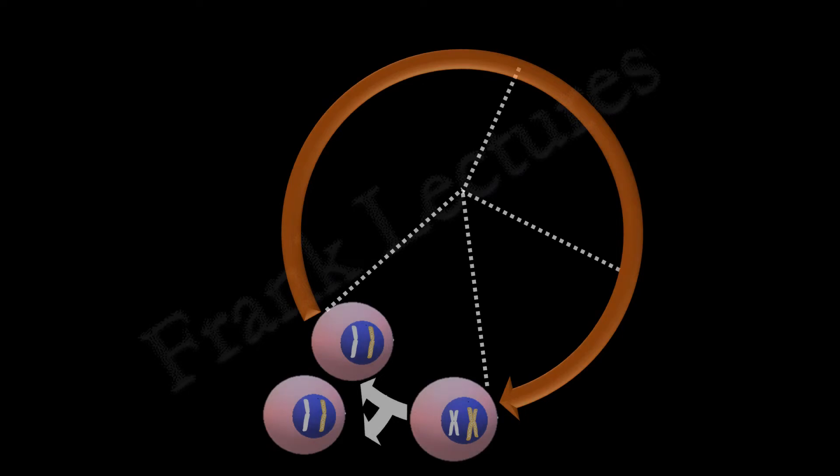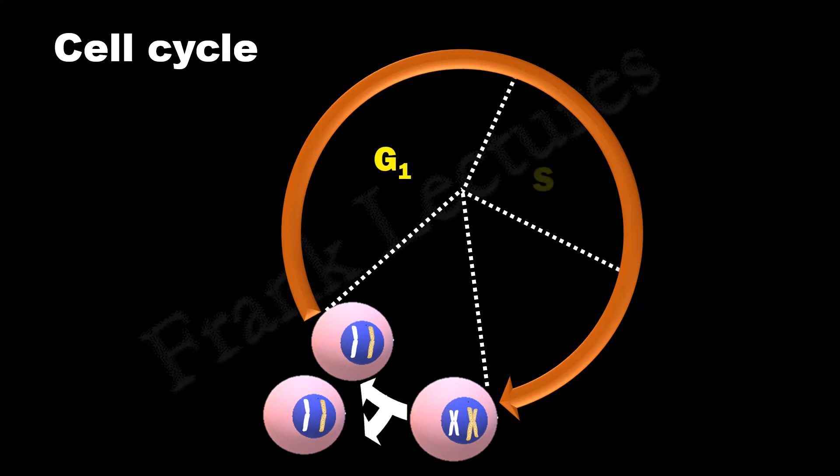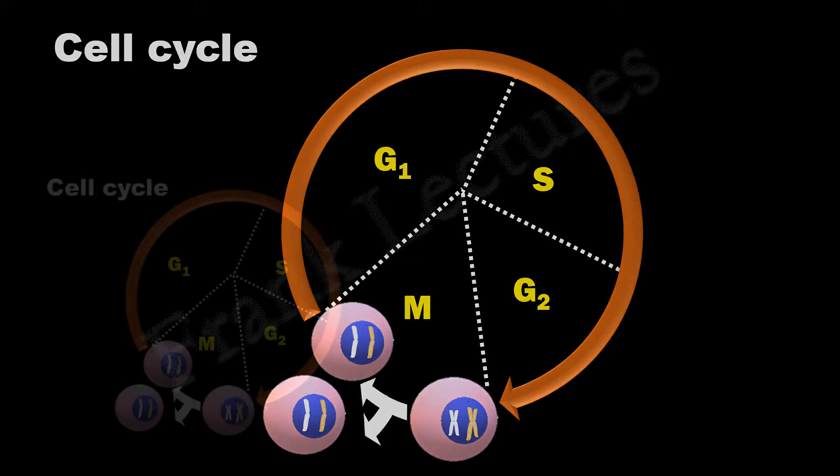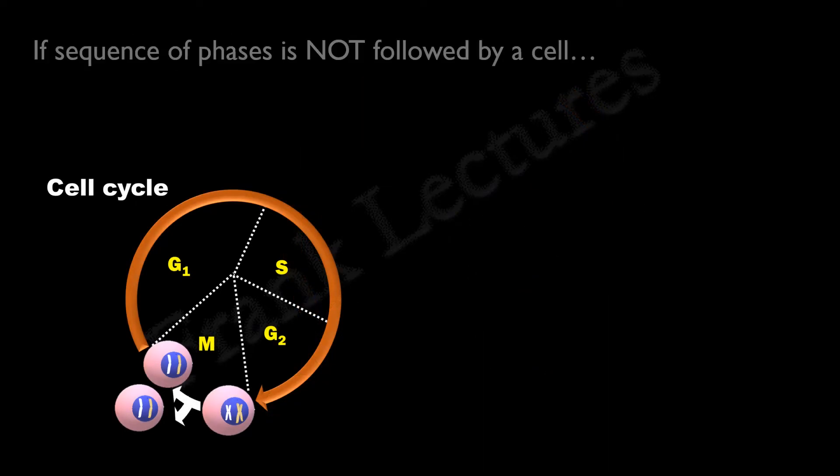This is the cell cycle. We know that every cell that divides proceeds from one phase of the cell cycle to the next in an order. Each phase of the cell cycle has an important function, and therefore it is essential that each phase should be properly completed before proceeding to the next phase. But if a cell does not follow the sequence of phases of the cell cycle, errors will take place.